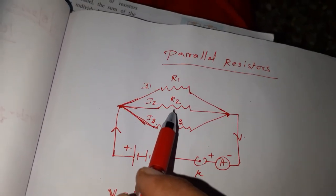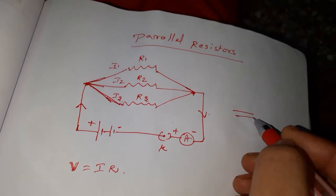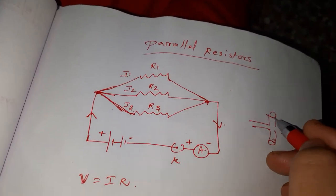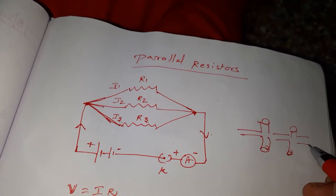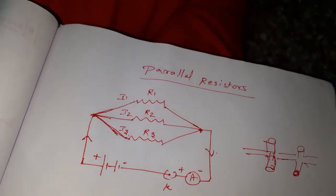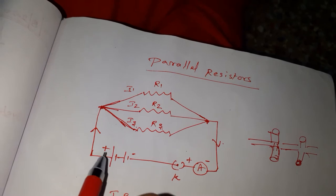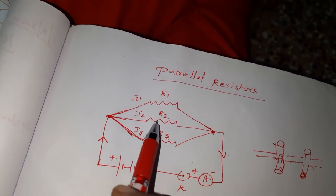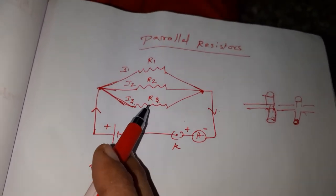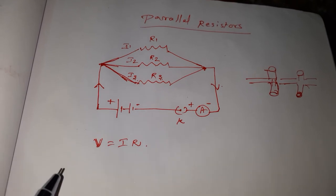If there is any problem in one connection, the others will keep working — as we studied about the tap connection. In a series connection, if there is a block at any one point, the other two will not work. But here in parallel, it is not like that. Each loop is a closed conducting path. If there is any damage in one loop, the current will still pass through the other two closed loops. In a series connection, it is a single loop — if there is any break, the passage of current won't be there.